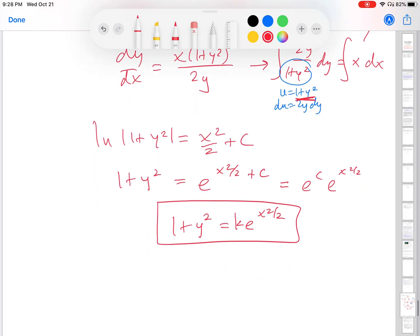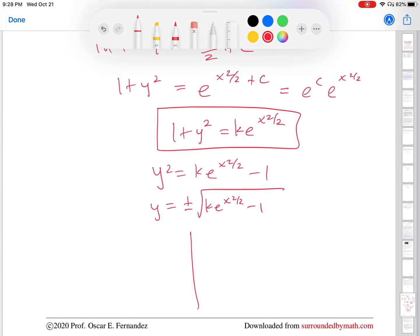We could graph it in what most of us are used to graphing in the plane by solving for y. So we could express it in this way, plus or minus the square root of k e to the x squared over 2 minus 1. So what that's going to do for us if we were to graph that is if we take the positive square root, it'll graph stuff up here.